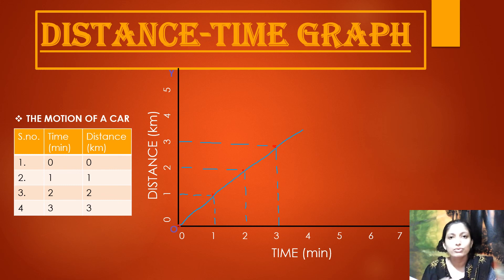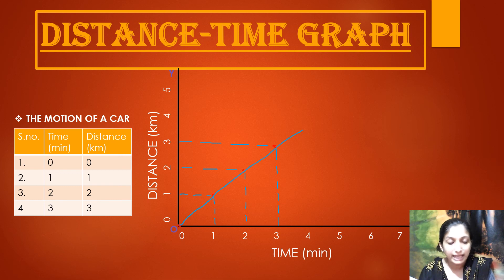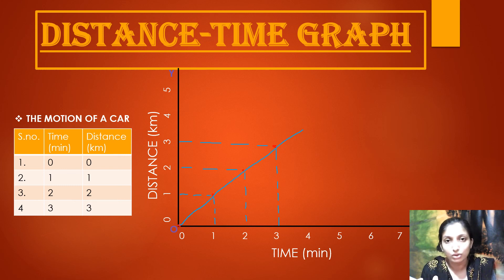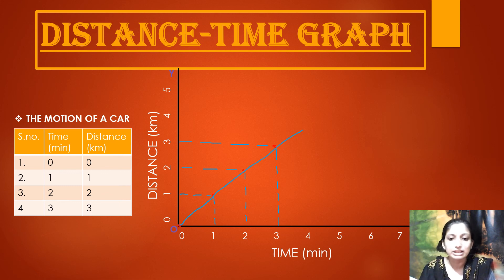Whenever you draw a graph, you need to specify what is on the x-axis and what is on the y-axis. The scale — meaning the spacing between numbers — must be uniform and consistent on both axes, so that equal intervals represent equal values throughout the graph.